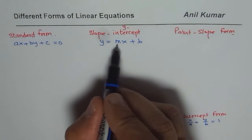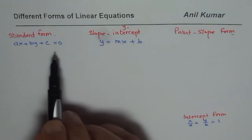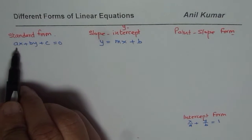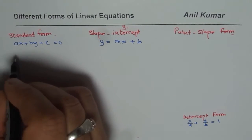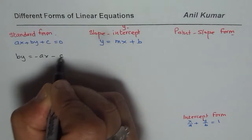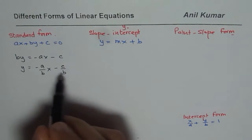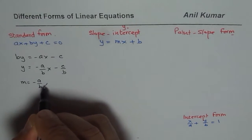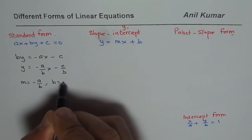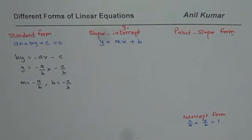Point-slope form is a rearrangement of the slope-intercept form, which I will show soon. To see how to interchange between forms: if we have ax plus by plus c equals 0 and want slope-intercept form, we isolate y. We get by equals minus ax minus c, so y equals minus a over b times x minus c over b. The slope is minus a over b and the y-intercept is minus c over b.